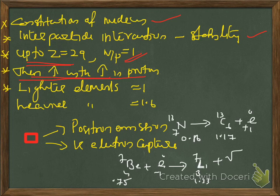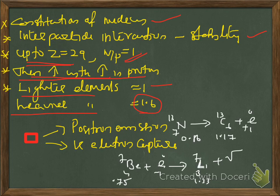For lighter elements, the n/p ratio should be 1, and for heavier elements it should be 1.6. If the mass number crosses 200, we reach 1.6. For lighter elements, n/p ratio of 1 means stability, and for heavier elements, n/p ratio of 1 is not a good parameter — there it should be around 1.6. An n/p ratio of 1.6 means the number of neutrons should be around 60% higher than the number of protons. As mass number increases, the number of neutrons increases, which reduces inter-proton repulsion and keeps the nucleus stable.